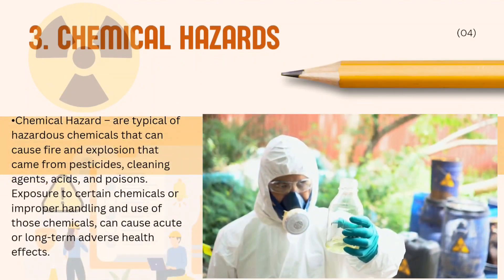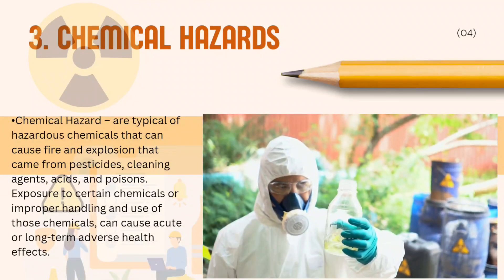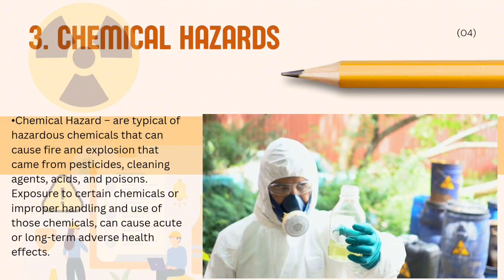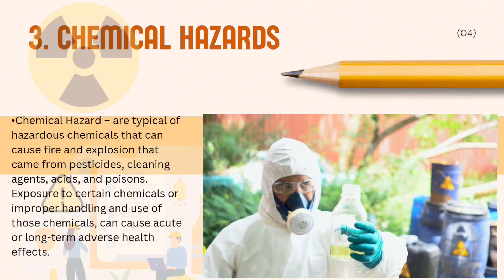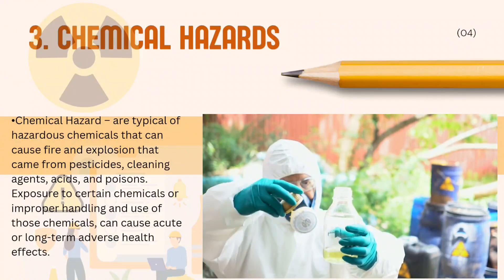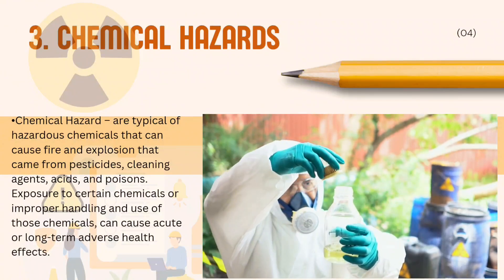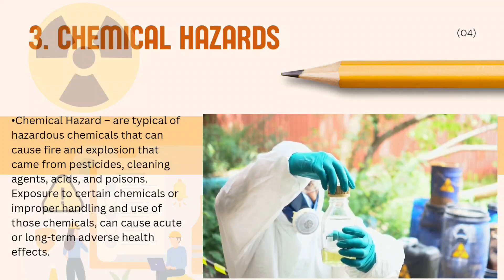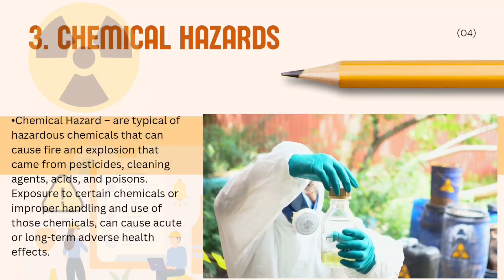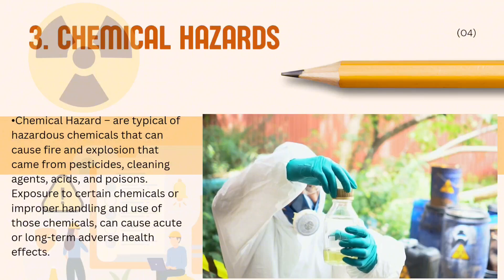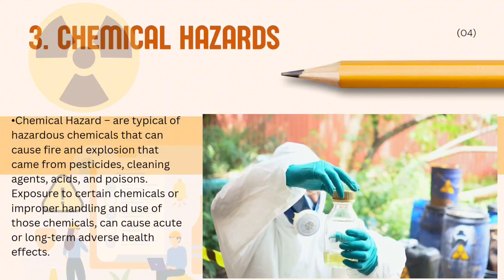3. Chemical hazard. Chemical hazards are typical of hazardous chemicals that can cause fire and explosion, coming from pesticides, cleaning agents, acids, and poisons. Exposure to certain chemicals or improper handling and use of those chemicals can cause acute or long-term adverse health effects.